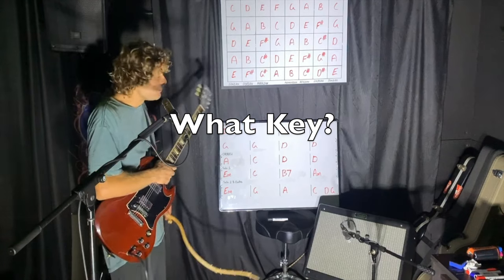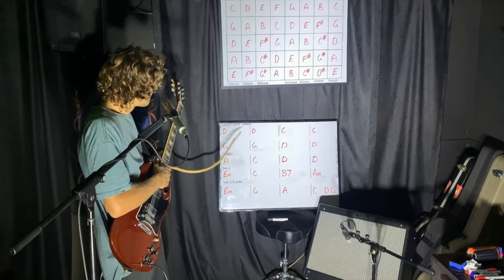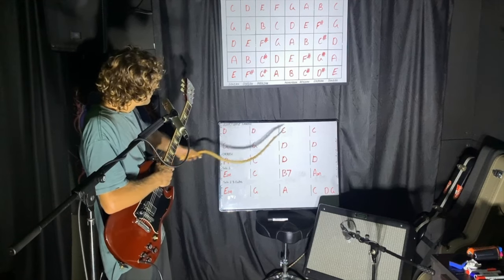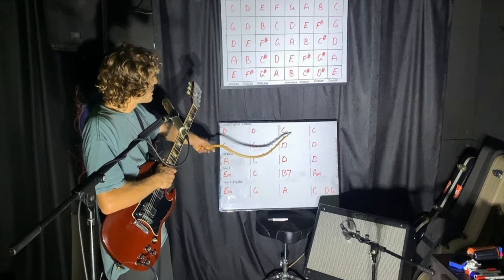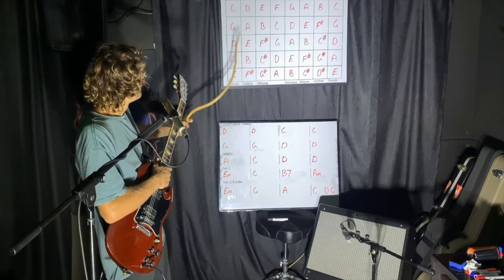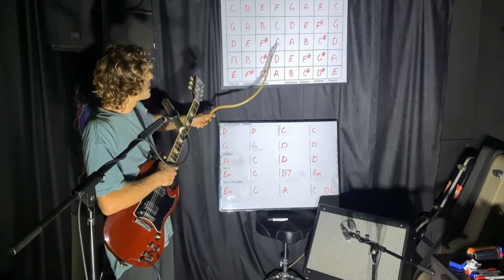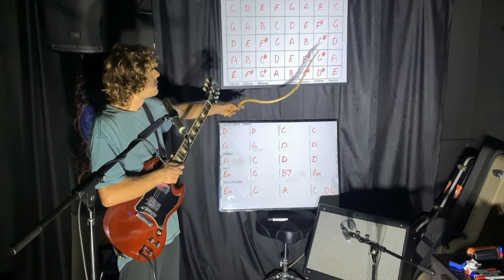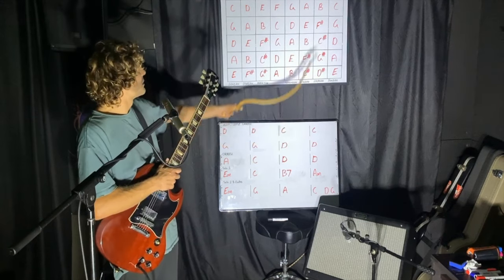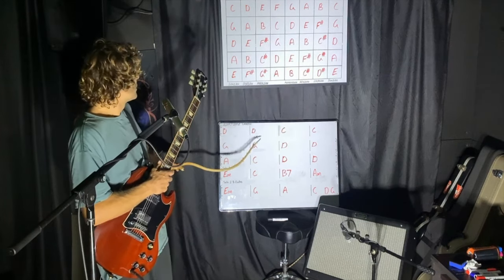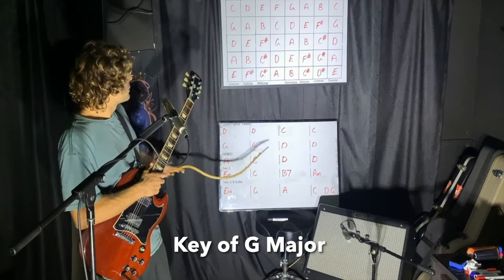The first thing we want to do is work out what key we're in. So let's look at the first chord — D. Could be D major, but wait, it can't be D major because we've got a C major chord. In the key of D major: D, E, F#, G, A, B — we've got a C#, so we can't have a C major in the key of D major, but we can in the key of G.